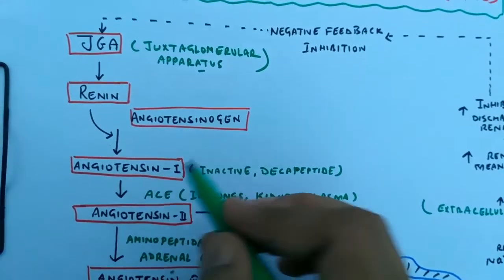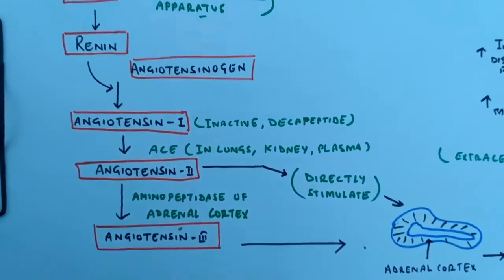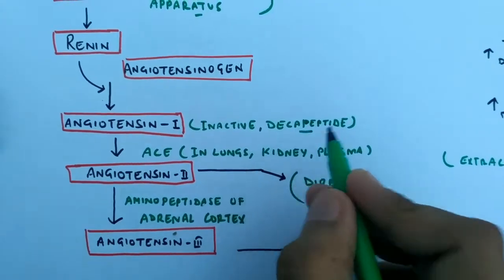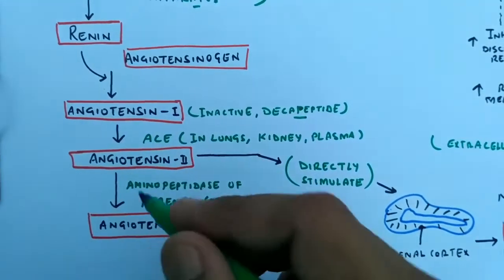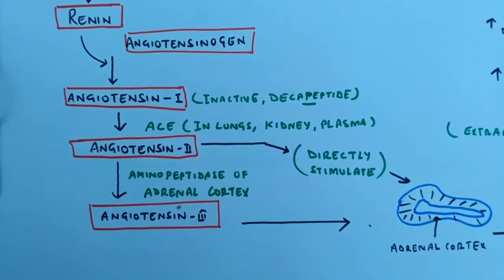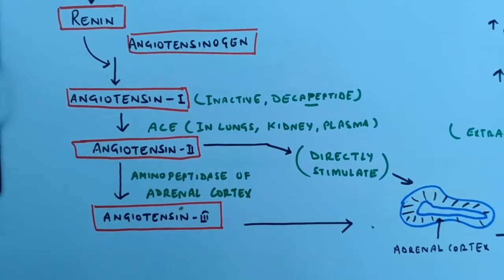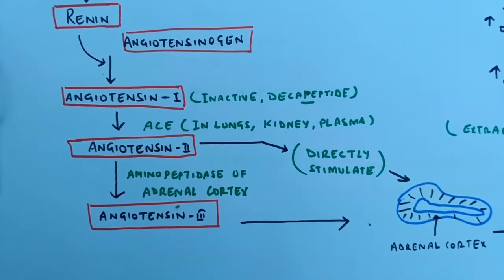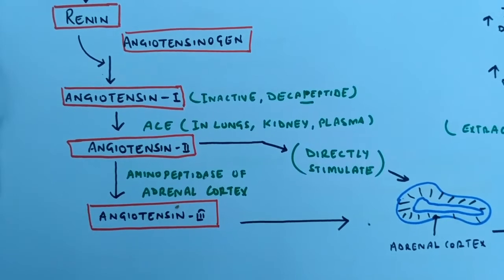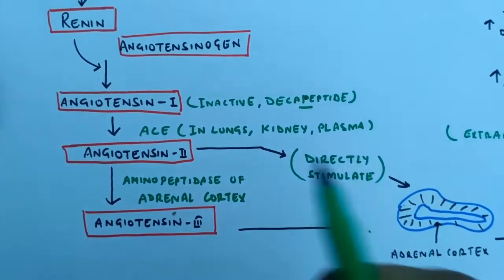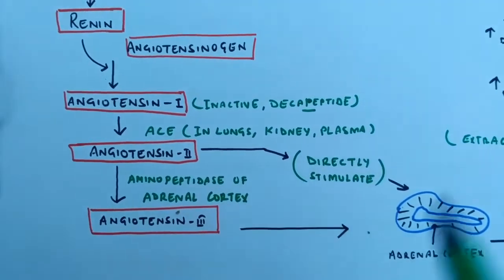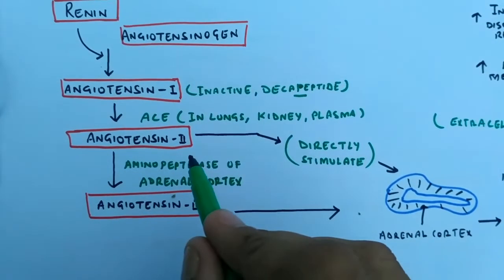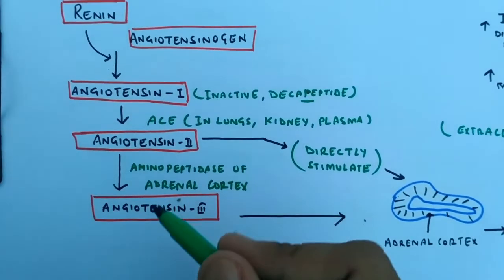Angiotensinogen is converted into angiotensin 1, which is still inactive and is a decapeptide. It is further cleaved into angiotensin 2 by ACE — the angiotensin-converting enzyme — which is a cleaving enzyme released by the lungs, kidney, and plasma.